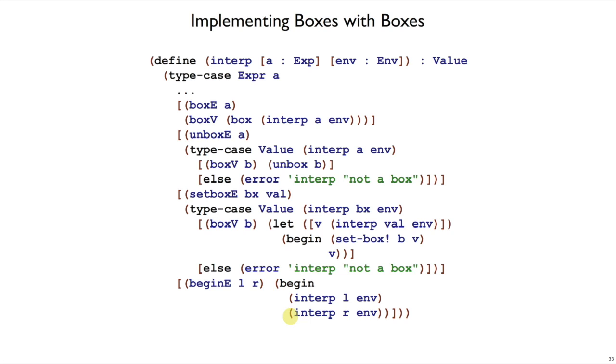So this is a complete and working implementation of boxes, when you put it with all the other code that you can find on the webpage. And we haven't learned anything about boxes. We've just said that we can implement boxes using boxes. So that's unsatisfying. As we're trying to understand state and understand the programming language feature of state, we want to instead do it without using any other state. And that's what we'll do next.